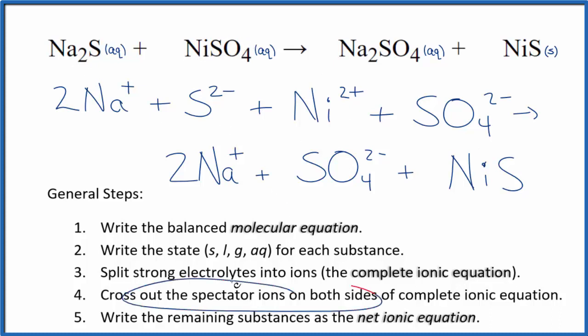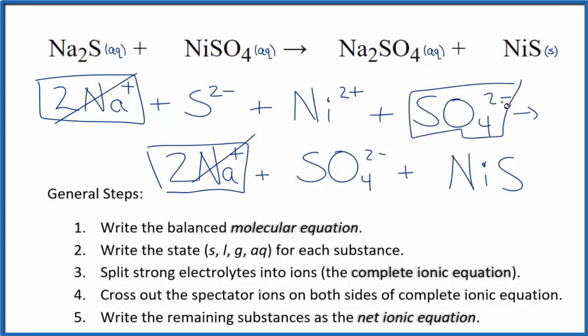Now we're going to cross out the spectator ions. They're on both sides. So on the reactants here we have two sodium ions, and in the products again we have two sodium ions. These are spectator ions. We're going to cross those out. Looks like we have a sulfate ion in the reactants and again in the products spectator ions. Cross them out. What's left is the net ionic equation for Na2S plus NiSO4.